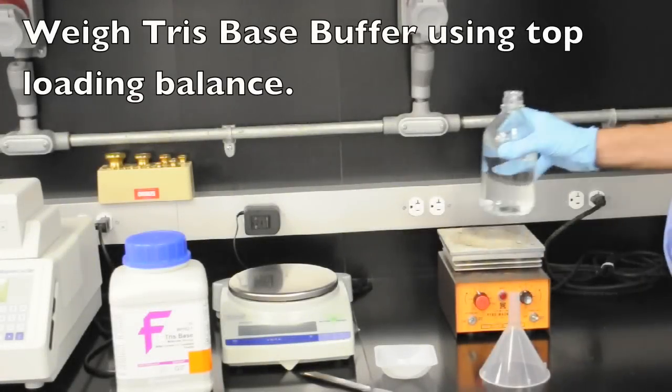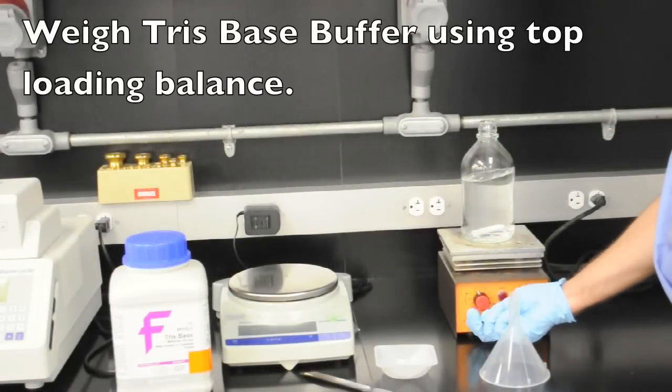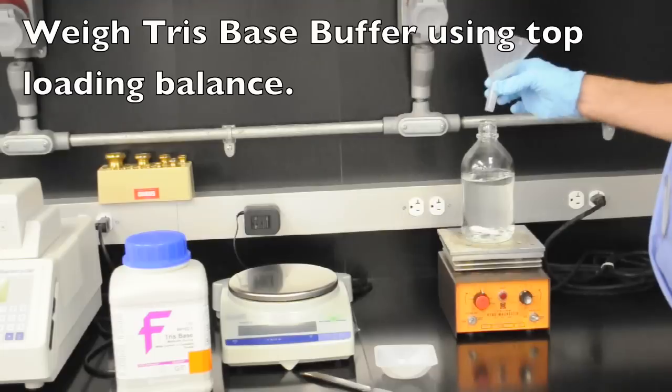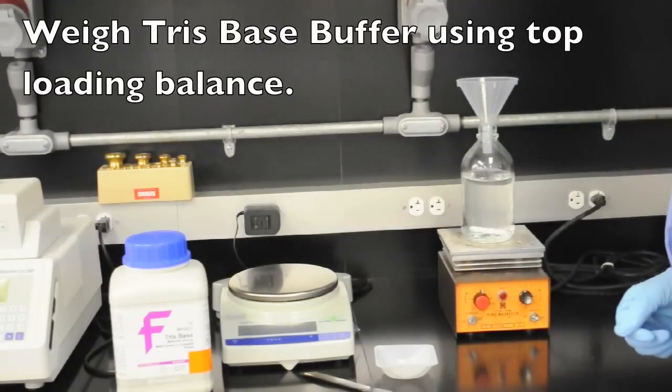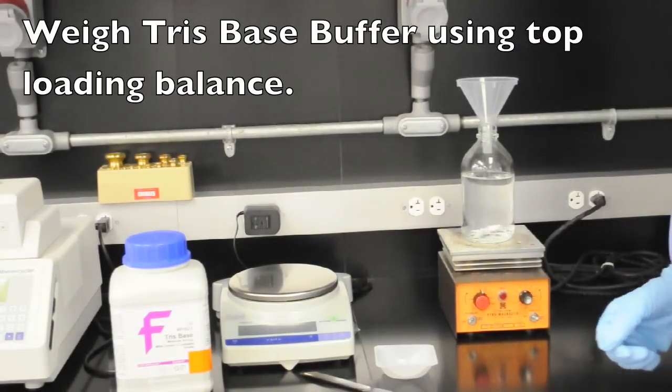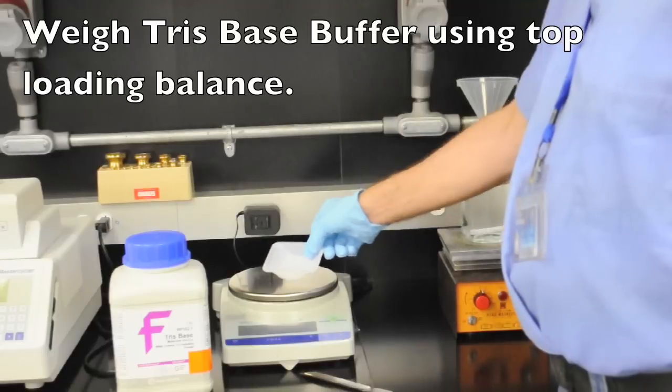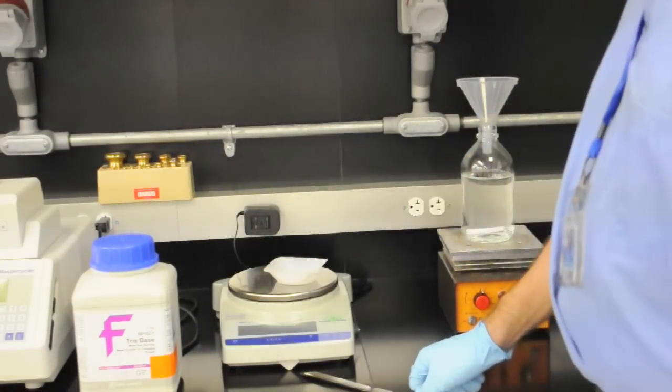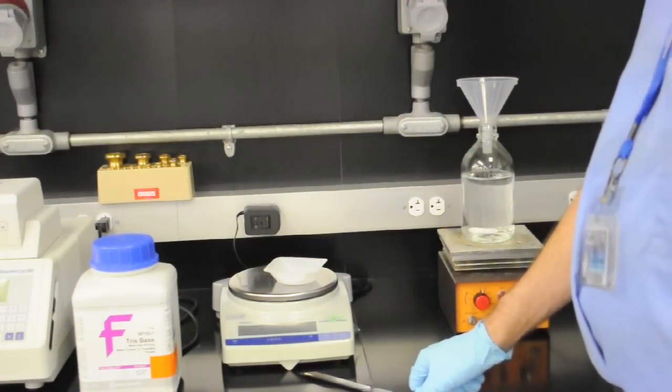Next we're going to weigh out the tris base. So first we place our reagent bottle, let the stir bar on the magnetic stirrer and get the liquid moving. There's a powder funnel that's put in place. The weighing boat is added to the balance and it's tared. We have to wait for the balance to stabilize on 0.00 before we can take our measurements.